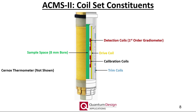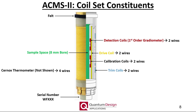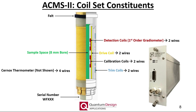Within the ACMS2 coil set is a CERNOX thermometer, which is critical for accurate sample thermometry. Note that the ACMS2 coil set uses all 12 of the available sample chamber wiring connections. The felt helps ensure the coil set is properly centered within the sample chamber and only weakly coupled to it. The coil set serial number will be indicated at the bottom of the puck. Finally, the necessary electronics to energize the drive and trim coils, as well as the lock-in amplifier needed to measure the AC voltages generated in the detection and calibration coils, resides within the ACMS2 module, which also includes the bridge card necessary to read the coil set thermometer.